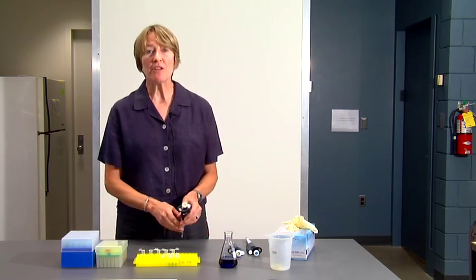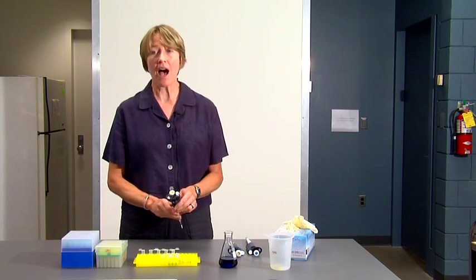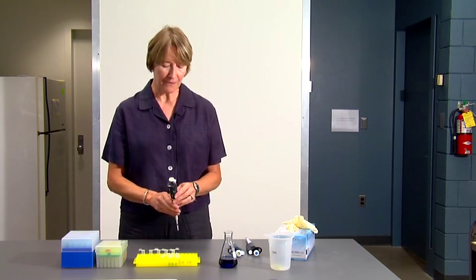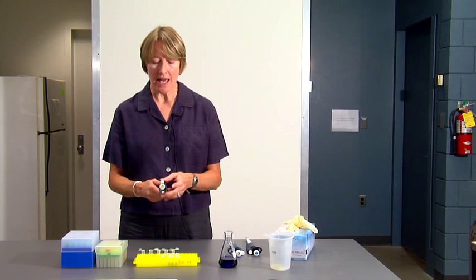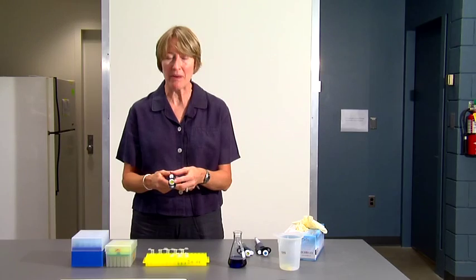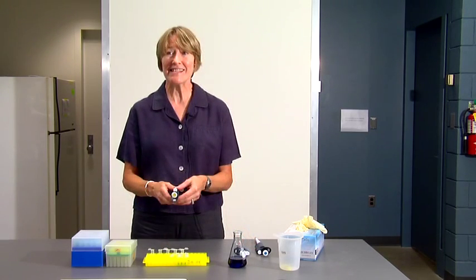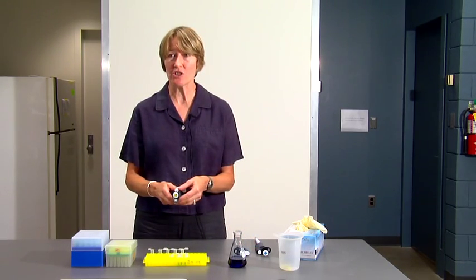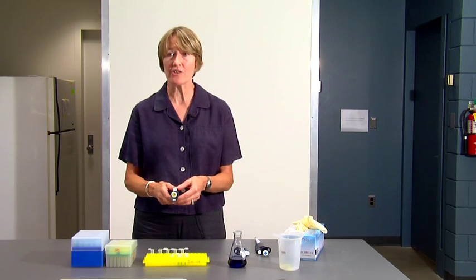In lab, we're going to be using three different sizes of micropipets. A P20, and you'll notice that on the top of the plunger, it has the size of the pipet. It says P20. This delivers 2 microliters to 20 microliters of fluid.